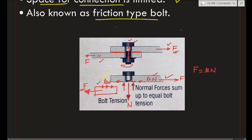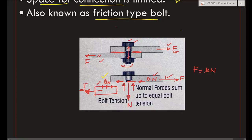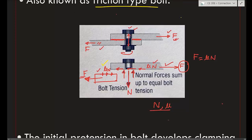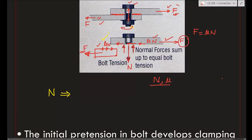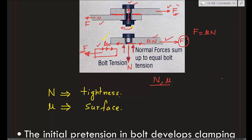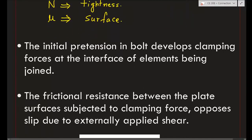This is the mechanism of friction by which forces from one member get transferred to another. The key point is how much force can be transferred — it directly depends on μ × N, that is, the normal reaction and the friction coefficient. To increase the normal reaction, we can tighten the bolt more. N depends on how many turns we have tightened the bolt, and μ depends on the surface — whether it is rough or smooth.